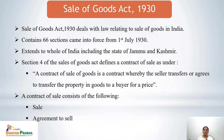The Sales of Goods Act deals with the sales of goods in India. The Act came into force from 1st July 1930 and contains a total of 66 sections with provisions regarding the sale of goods in India. The Sale of Goods Act extends to the whole of India including the state of Jammu and Kashmir. Previously this Act was not applicable in Jammu and Kashmir, but with the passing of the Jammu and Kashmir Reorganization Act 2019, the word 'excluding' was changed to 'including' the state of Jammu and Kashmir.